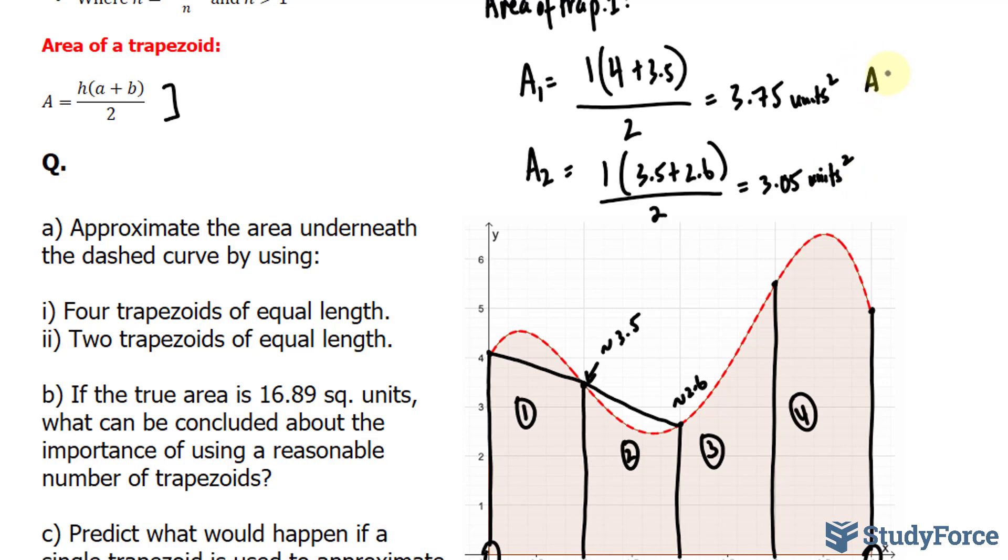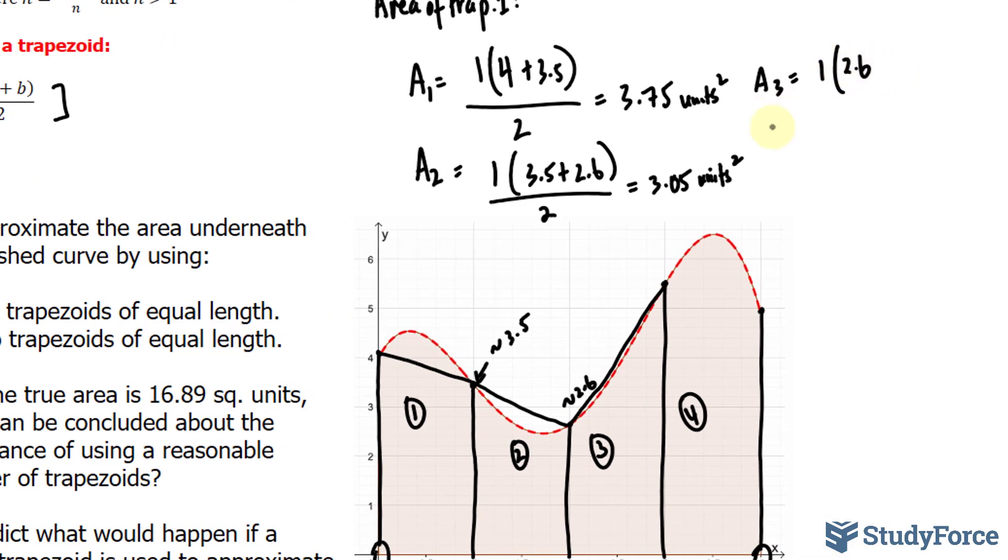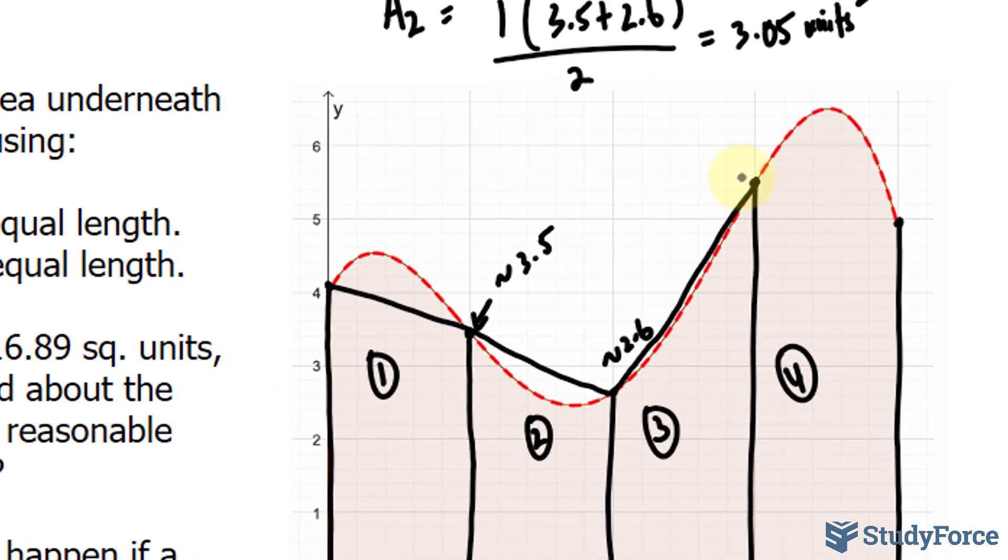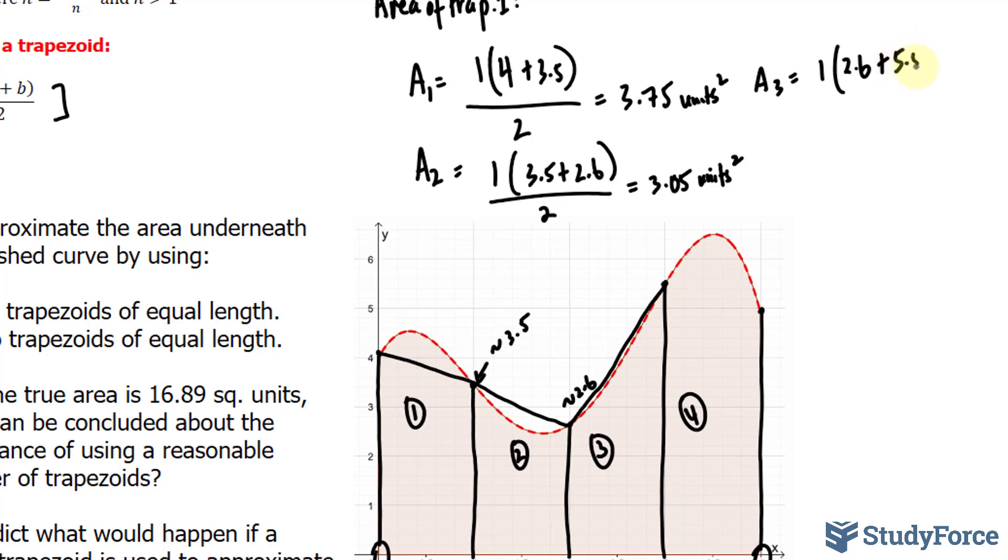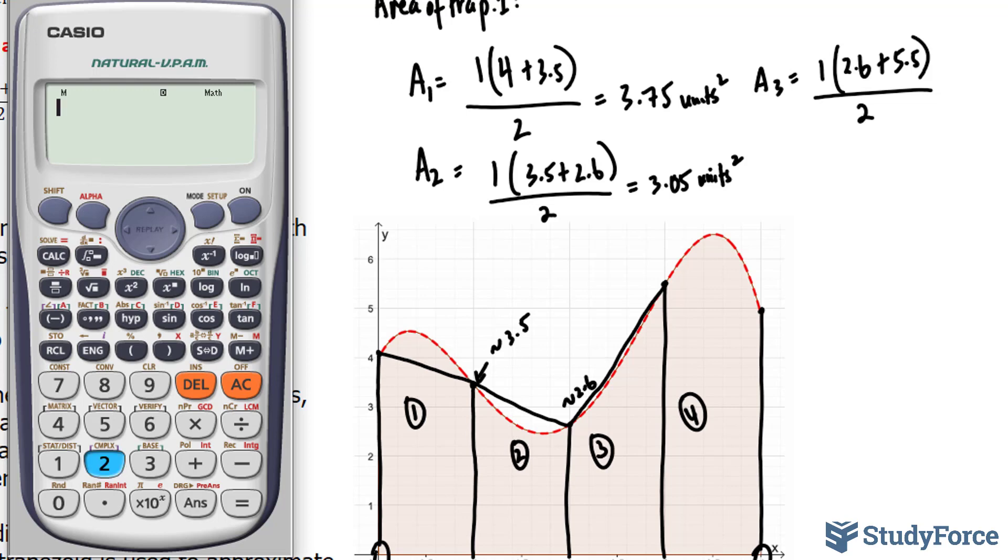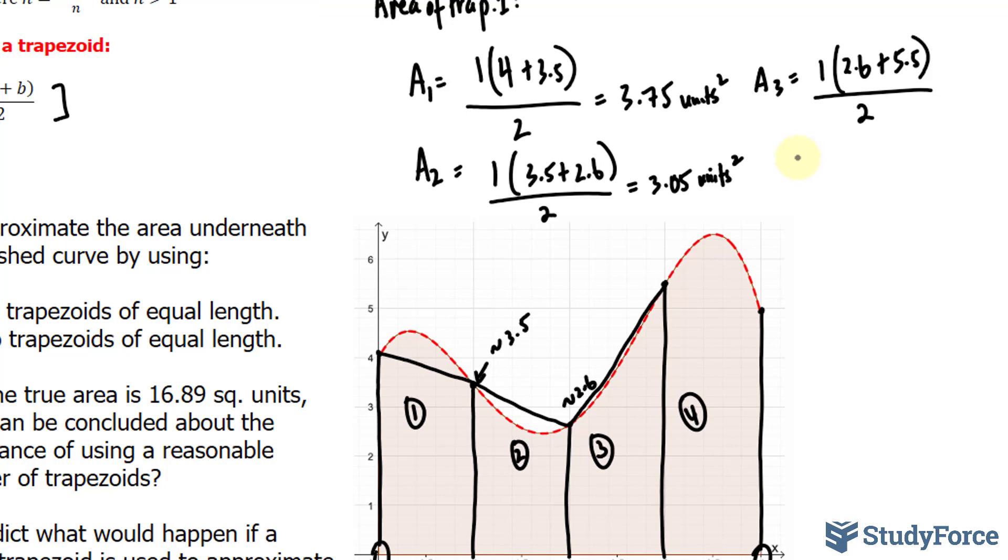Now, let's go ahead and find the area of the third trapezoid. We'll connect this point to that point. And again, height is 1. The length of that was determined to be 2.6 in the previous area that we found. Plus, the length of this one looks to be around 5.5. And we'll divide that by 2. So, let's use our calculator. 2.6 plus 5.5 divided by 2. And we end up with 4.05 units squared.